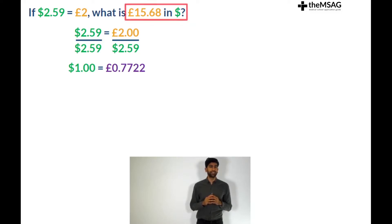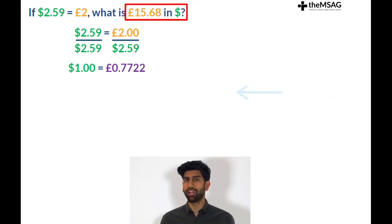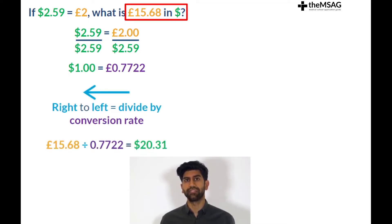We now need to convert the £15.68 into dollars. Are we going from left to right or right to left? We're going from right to left, pounds to dollars. This means we divide by the conversion rate. £15.68 divided by 0.7722 equals $20.31. This is the correct answer.